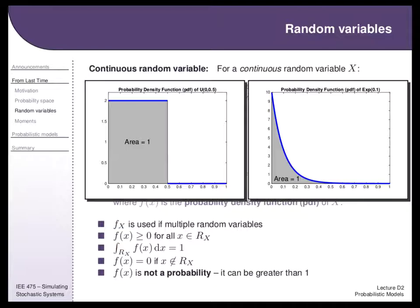As a quick example: a uniformly distributed random variable between zero and 0.5. For the area underneath that density to equal one, the density goes up to two. So all densities for that range are above one — equal to two — but because they're only equal to two for a small interval from zero to 0.5, the area in that rectangle equals one. For an exponential with mean 0.1, the density at zero goes all the way up to ten. The area under it still has to equal one — it's only the area that's bounded, not the height.